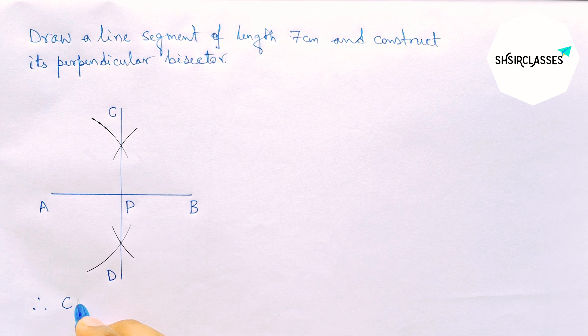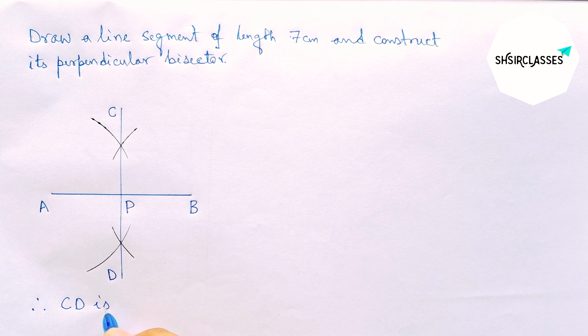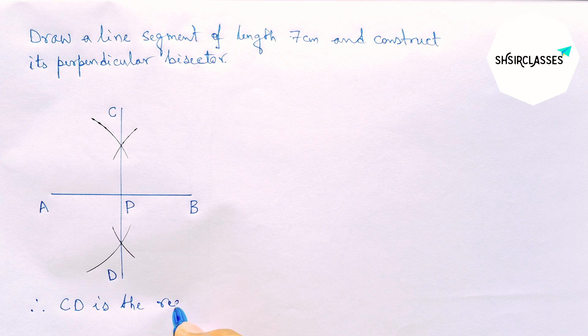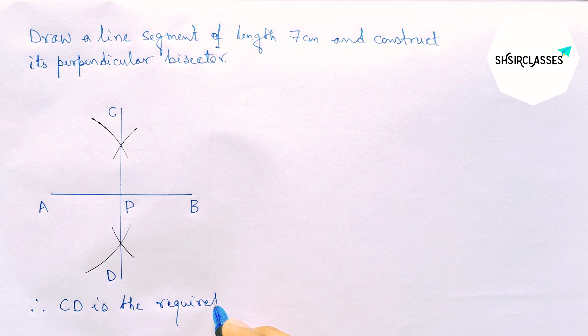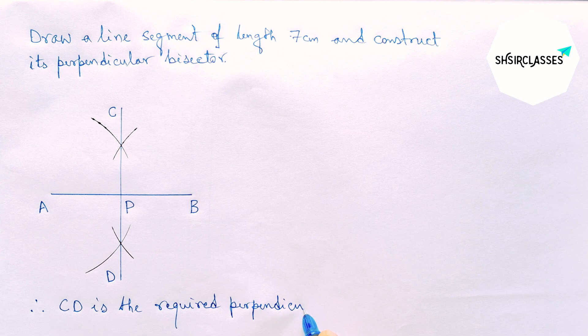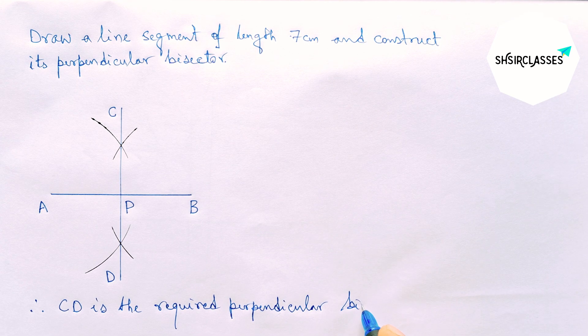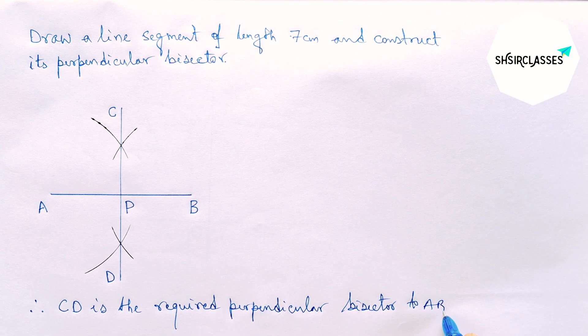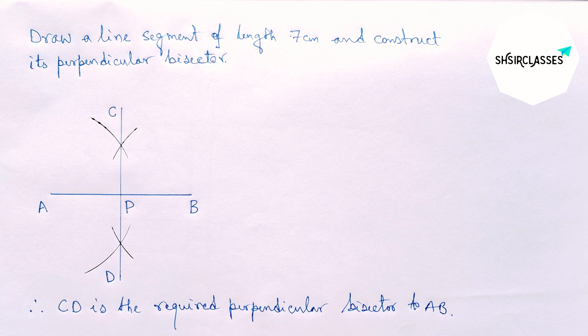so therefore CD is the required perpendicular bisector to the line segment AB and by this way you can construct a perpendicular bisector to a given line segment.